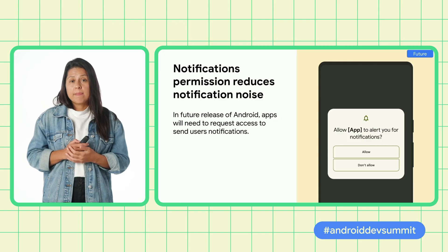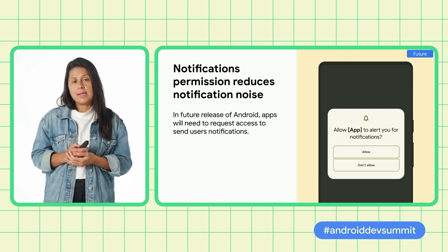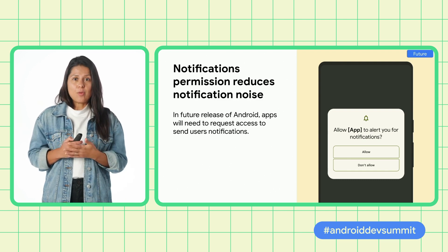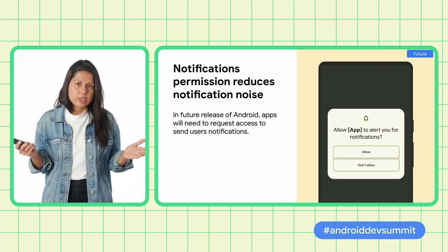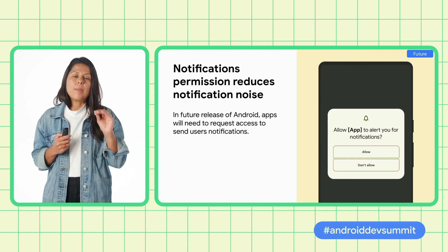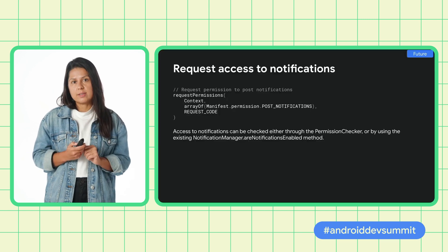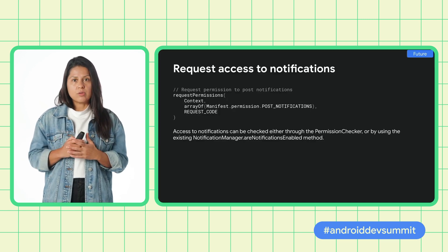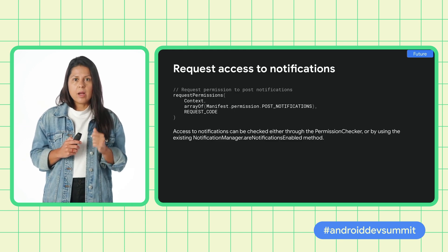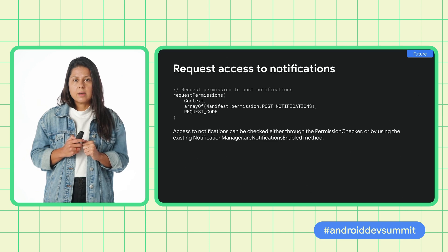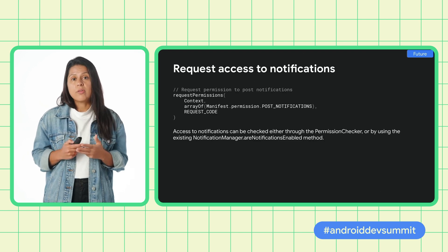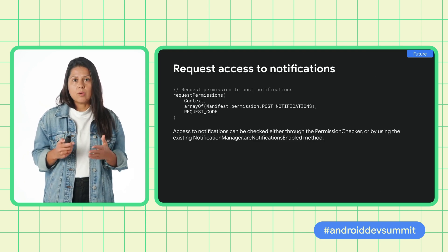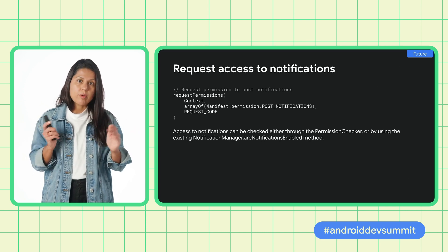Users also tell us that they're overwhelmed by the number of notifications they get and want to have more control over which apps get to communicate with them. In a future release of Android, we're adding a new notification permission. This permission will work like all other permissions and will require the user to grant the app access before an app can send user notifications. If your app needs to send notifications, going forward please declare post_notifications in your manifest. You can check access to notifications using the existing NotificationManager.areNotificationsEnabled() method.